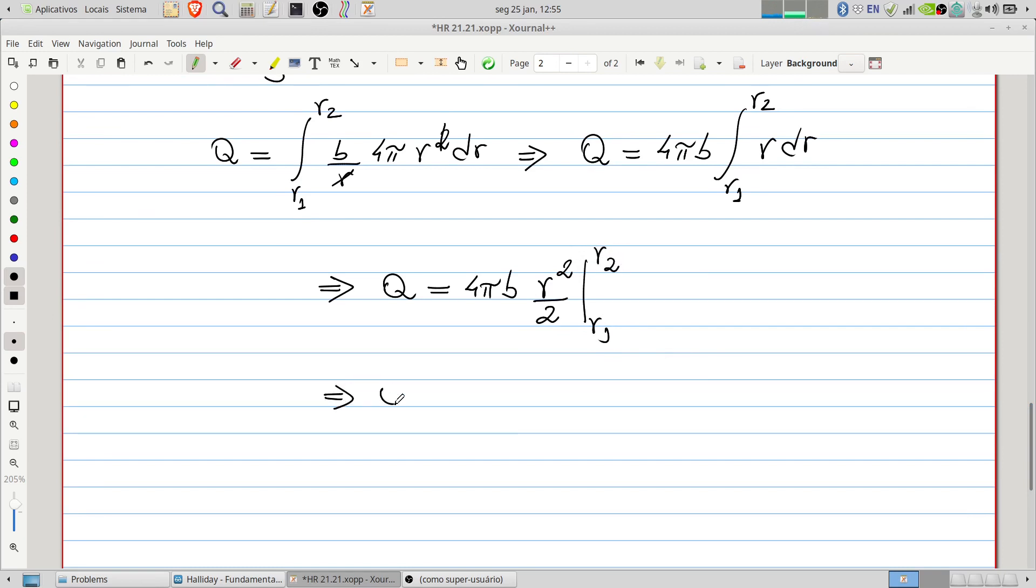Therefore, the charge will be, here we can cancel, and we have 2, so we have here 2πb multiplied by r2² minus r1².